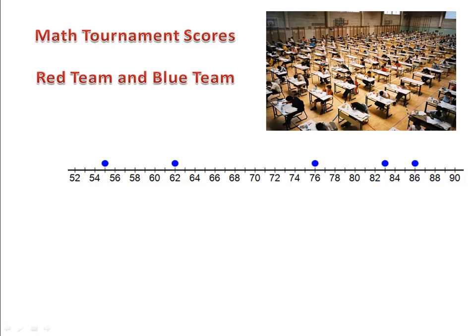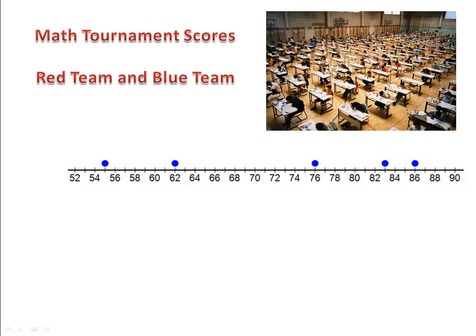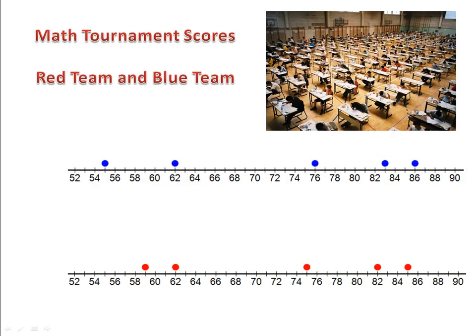Let's take a look at the scores. Each dot represents the number of points earned by a player at the math competition. One of the players earned 55 points, another one 62 points, 76, 83, and 86. The red team had scores of 59 points, 62 points, 75, 82, and 85 points.